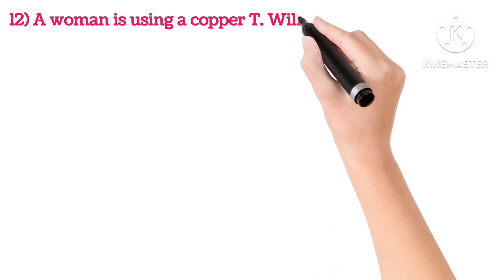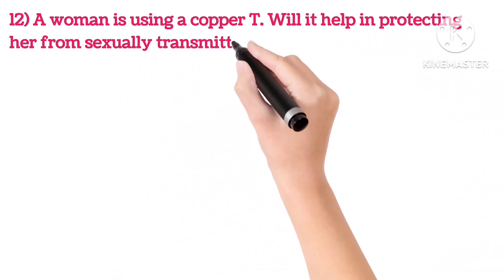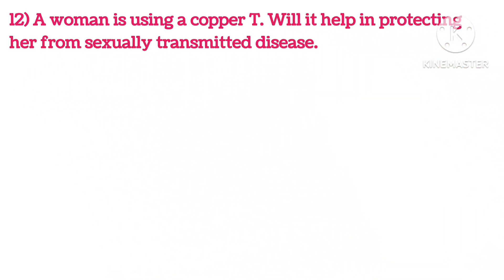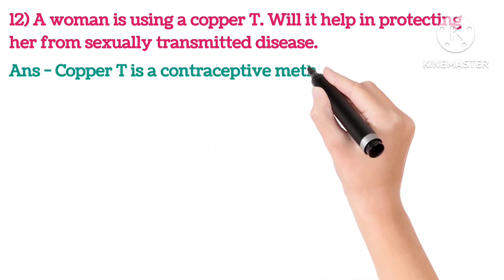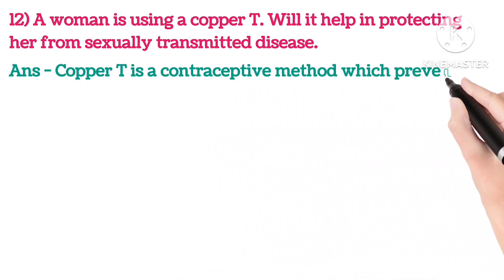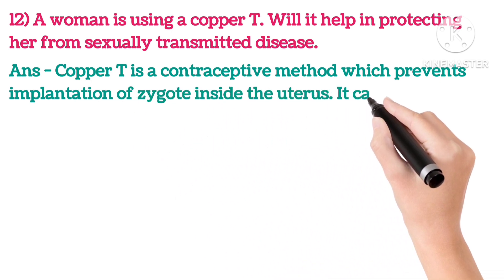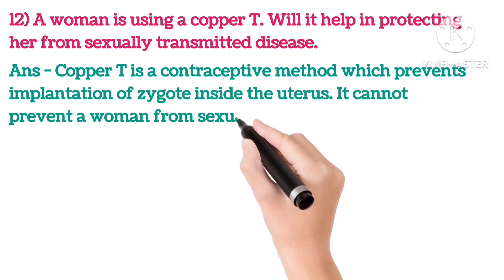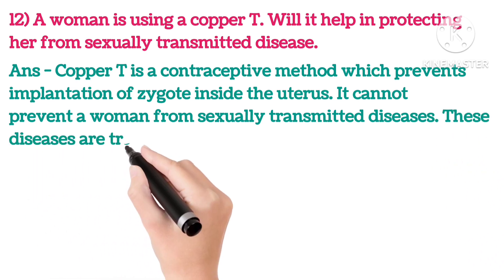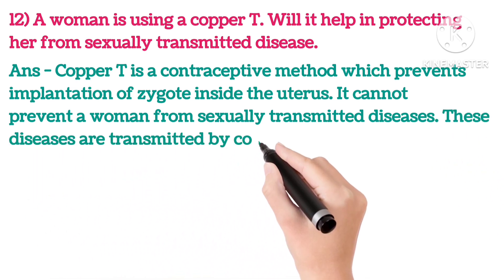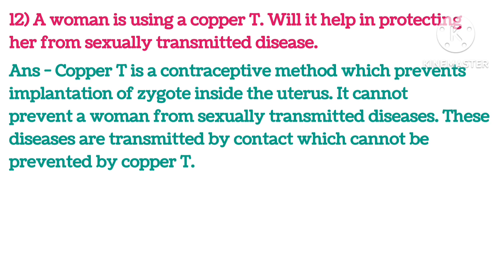Twelfth: A woman is using a copper T. Will it help in protecting her from sexually transmitted diseases? Copper T is a contraceptive method which prevents implantation of the zygote inside the uterus. It cannot prevent a woman from sexually transmitted diseases, as these diseases are transmitted by contact, which cannot be prevented by copper T.